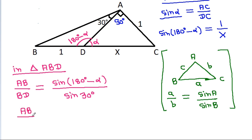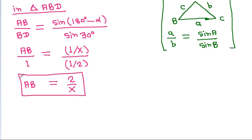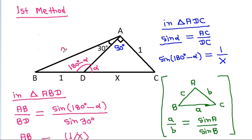AB by BD equals 1, so AB by 1 equals (1/X) by sin 30°, which is 1/2. Therefore AB equals (1/X) times (1/2) inverted, giving AB equals 2 by X.